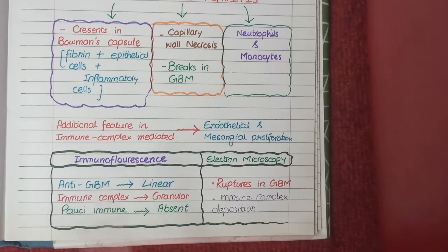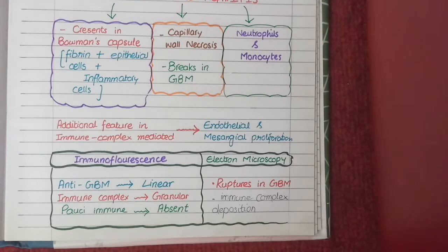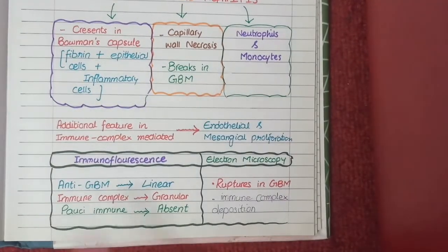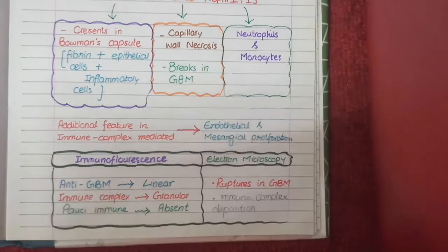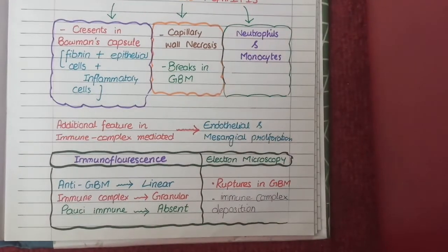On electron microscopy, the key feature visible is ruptures in the glomerular basement membrane. Rapidly progressive glomerulonephritis implies severe injury to glomeruli, and this severe injury appears as broken or ruptured glomerular basement membrane on electron microscopy. Additionally, in immune complex mediated glomerulonephritis, you will also be able to see immune complex deposits. This concludes our discussion on rapidly progressive glomerulonephritis.